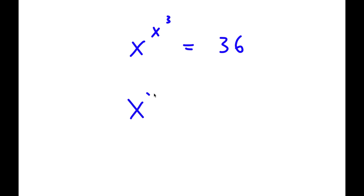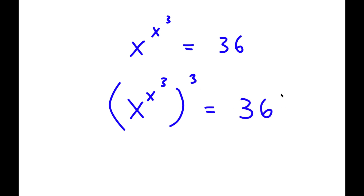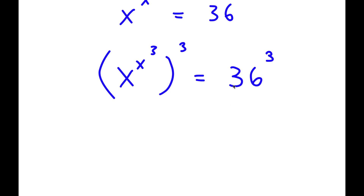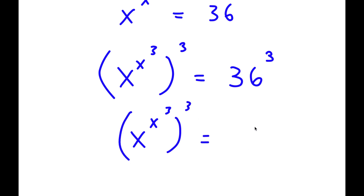Now I have x to the power of x to the power of 3, to the power of 3, is equal to 36 to the power of 3. Now 36 is the same thing as 6 to the power of 2, so I have x to the power of x to the power of 3, to the power of 3, equal to 6 to the power of 2 to the power of 3.